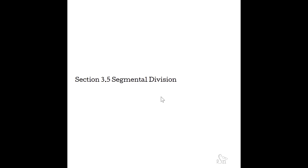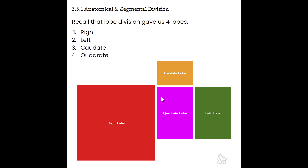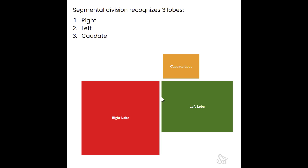Remember: portal triad is intrasegmental (runs within a segment), hepatic veins are intersegmental (run between segments). Anatomical lobe division gave four lobes: right, left, caudate, quadrate. Segmental division recognizes only three lobes: right, left, and caudate. Using segmental division, the caudate lobe stays as is; the left lobe is divided into the left lateral segment and the left medial segment; and the right lobe is divided into the right anterior segment and the right posterior segment.